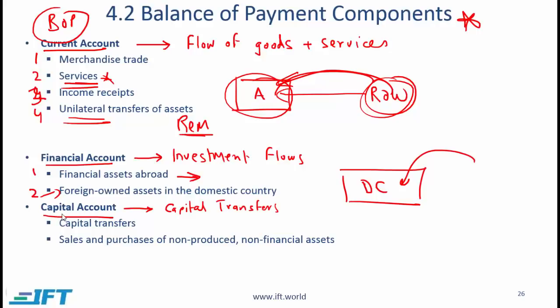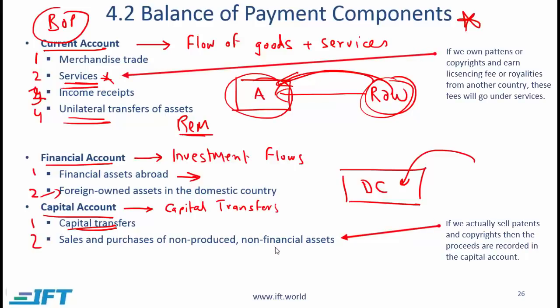Finally, we come to the capital account, which has two sub-accounts. The major one is capital transfers, which would include debt forgiveness, transfer of funds linked to the sale or acquisition of fixed assets, gift and inheritance taxes, death duties, uninsured damage to fixed assets, and legacies. The second is sales and purchases of non-produced, non-financial assets, which would include rights to natural resources and the sale and purchase of intangible assets such as patents, copyrights, trademarks, franchises, and leases.